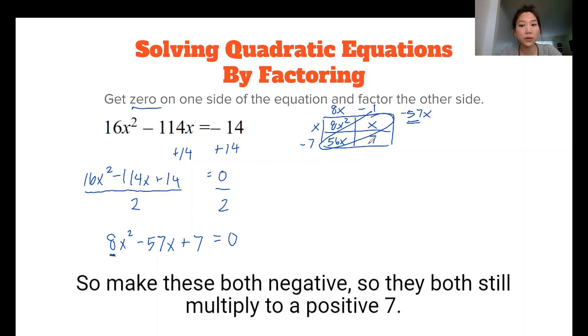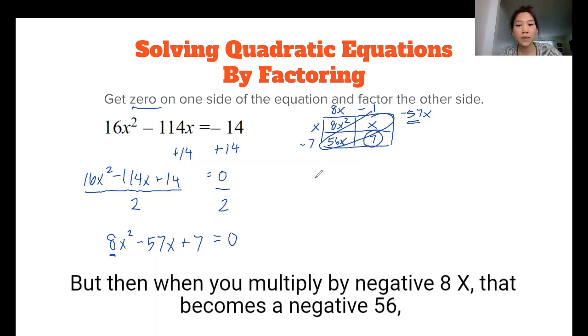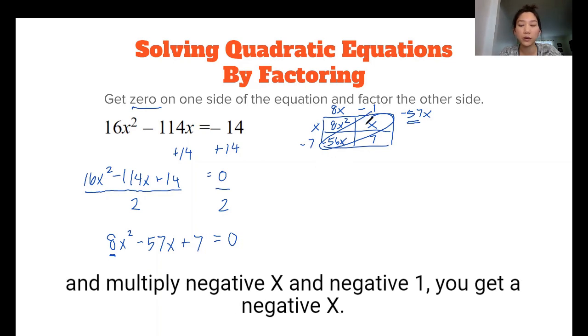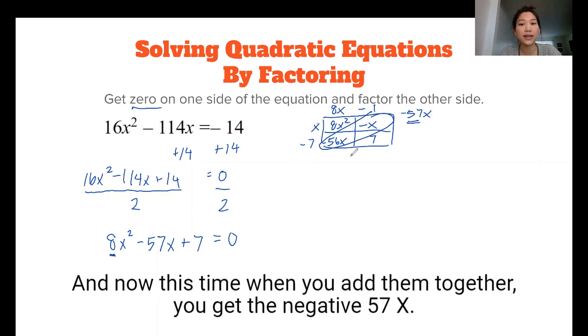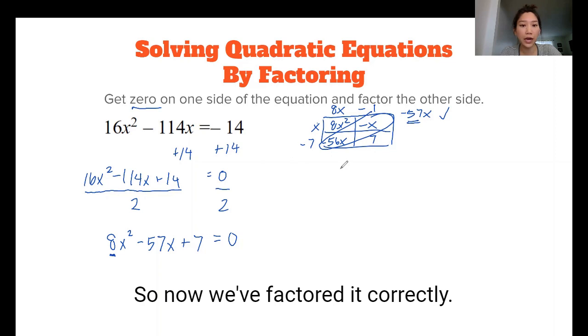So they both still multiply to a positive 7. But then when you multiply by negative 8x, that becomes a negative 56x. And when we multiply by negative x and negative 1, you get a negative x. And now this time, when you add them together, you get the negative 57x. So now we've factored it correctly.